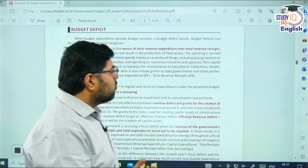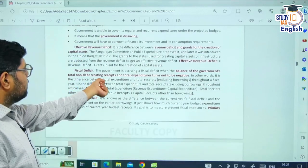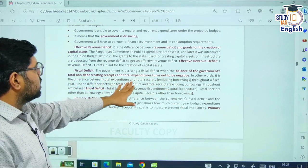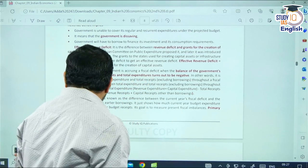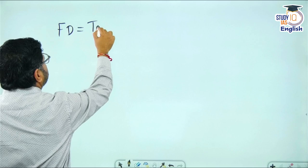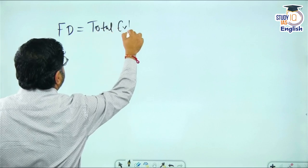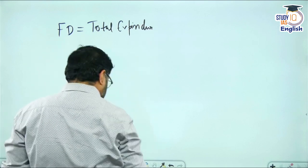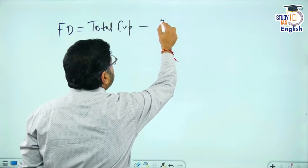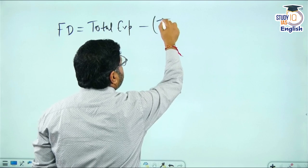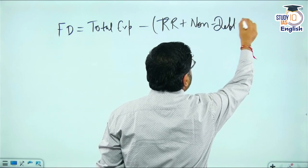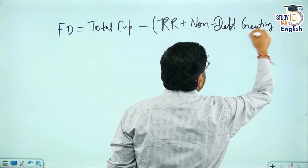First, understand what fiscal deficit is. The government is incurring a fiscal deficit when the balance of the government's total non-debt creating receipts and total expenditure turns out to be negative. In simple terms: fiscal deficit equals total expenditure minus revenue receipts plus non-debt creating capital receipts.